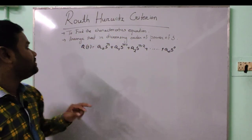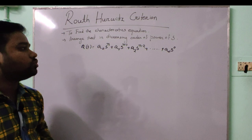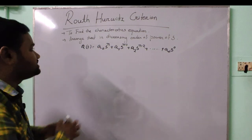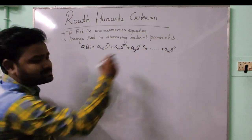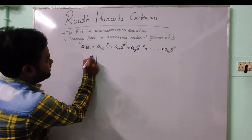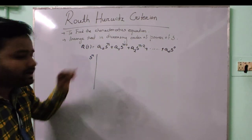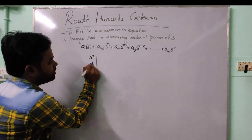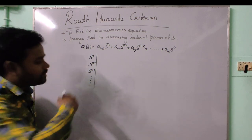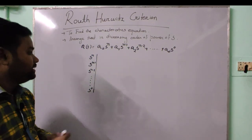The next step is to arrange this in a tabular method. In this table, the first row is written as s to the power n, the second row as s to the power n minus 1, the third row as s to the power n minus 2, and similarly down to the last row which is s to the power 0.